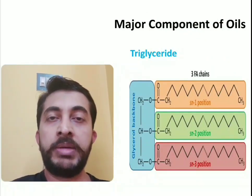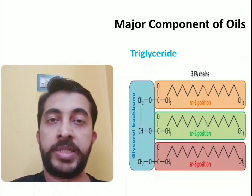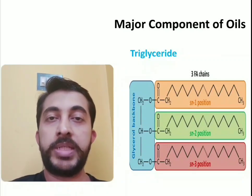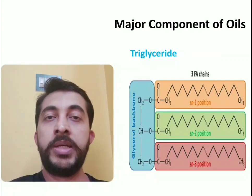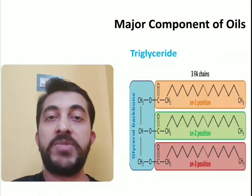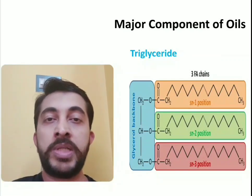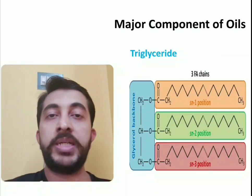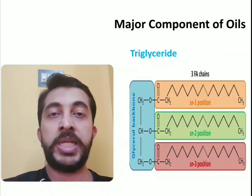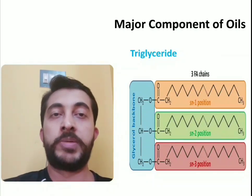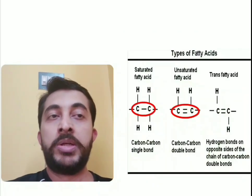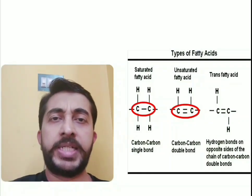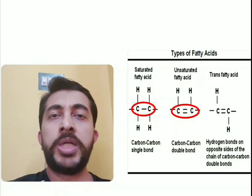Fats basically contain triglycerides as a major component. Triglycerides consist of a glycerol backbone — as you can see — with different types of fatty acids attached to it. You can see in three different colors, three fatty acid chains attached to the glycerol backbone.